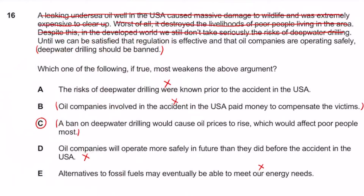Welcome back. Previously we looked at Question 16 on deep water drilling and why it should be banned. Hopefully you're starting to appreciate that in these questions, the main aim is to find which option weakens or strengthens — but you have to find the conclusion first in order to do that. The conclusion is actually a bit easier to find in these questions than in pure conclusion questions. Now we move on to IMAT 2017.